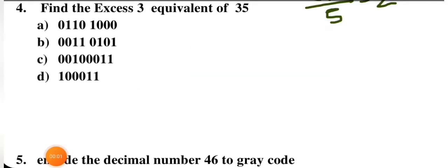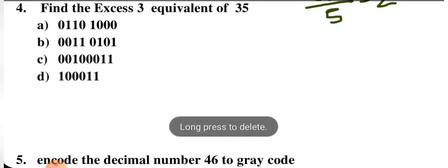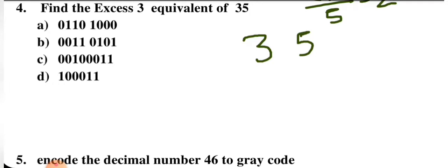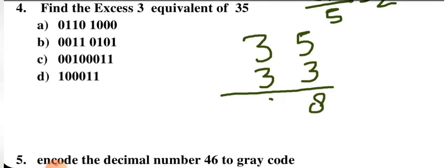Next question: find the XS3 equivalent of 35. XS3 means excess-3, so we add 3 to each individual digit. Adding 3 to 3 gives 6, and adding 3 to 5 gives 8.